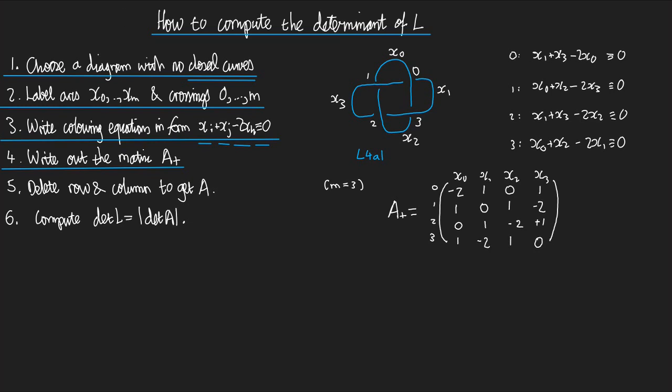Step number 5, delete a row and column to get A. What I do is, I look at A plus, I choose any column and delete it, and I choose any row and delete it. So I'm going to choose, for argument's sake, the 0 row and the 0 column. And then I can write out exactly what is A. It's the thing I get after that.